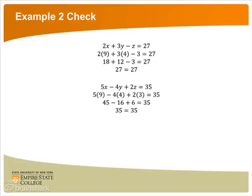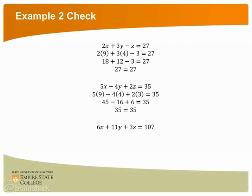Now for the last equation. This equation looks like 6 times x plus 11 times y plus 3 times z is 107. Plugging in, 6 times 9 plus 11 times 4 plus 3 times 3 may just equal 107. Doing the multiplication, we have 54 plus 44 plus 9, hopefully to equal 107. And it does. Since the solution checked out for all three equations, our job here is done.